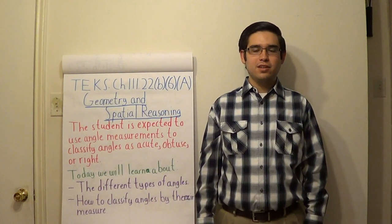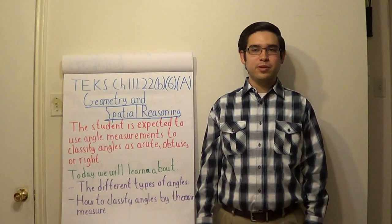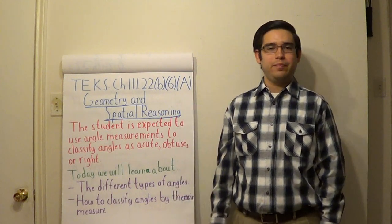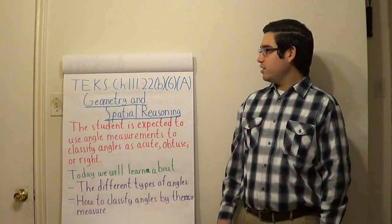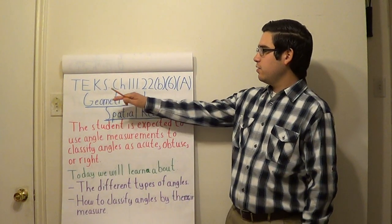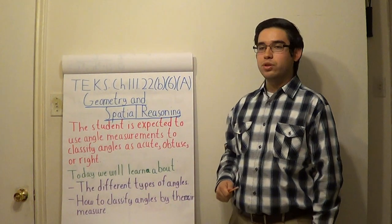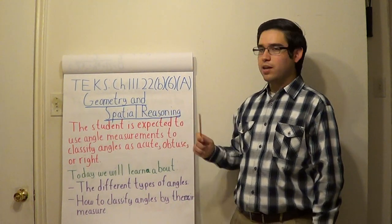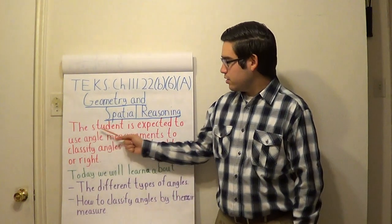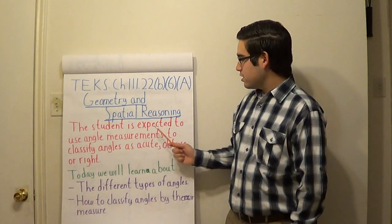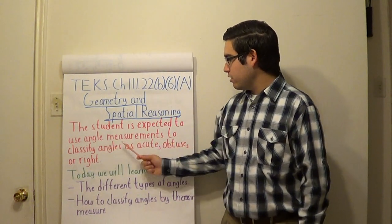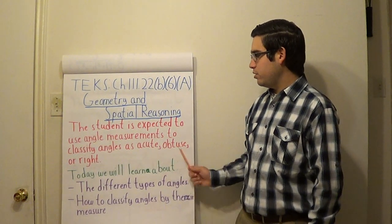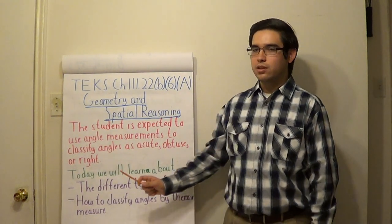Hello class, my name is Mr. Martinez and let's have ourselves a little bit of fun with geometry. Today we're going to be going over this TEKS from chapter 101.22 B6A and it reads: the student — that's you guys — is expected to use angle measurements to classify angles as acute, obtuse, or right.